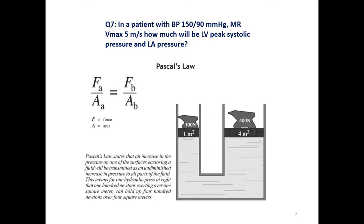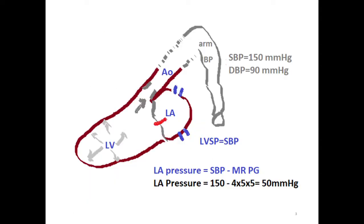If we remember Pascal's Law, in fluid systems the pressure at any point in a confined fluid system is equal. In the heart, there are two confined fluid systems: the left side and the right side. On the left side during the systolic phase, the blood pressure in the left ventricle is equal to the aorta.